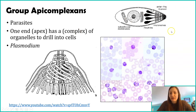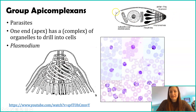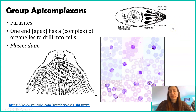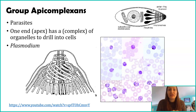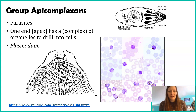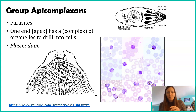Looking at this diagram, in the top right this is showing the entire apicomplexan. On one side the cell is a little more ovular in shape — this side on the right is the apical complex. 'Apical' refers to apex, meaning the end, and 'complex' is just the series of organelles. If we look closer at that apical complex, it kind of looks like a drill. Apicomplexans will literally go to cells of their host and drill through the plasma membrane in order to get inside that cell.